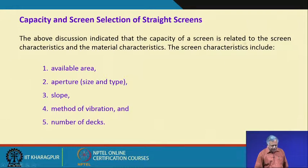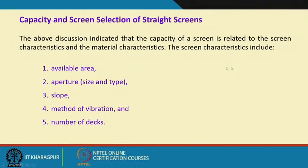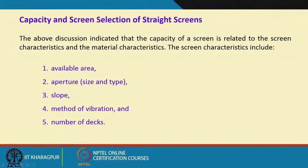The capacity of a screen is related to the screen characteristics and the material characteristics — material means what material we are trying to feed. The screen characteristics include the available area: the total surface area of the screen, meaning what is the length and what is the width. Number two is the aperture — what sizes and what type, whether it is circular opening, rectangular opening, or square opening. All these affect the capacity of the screen.